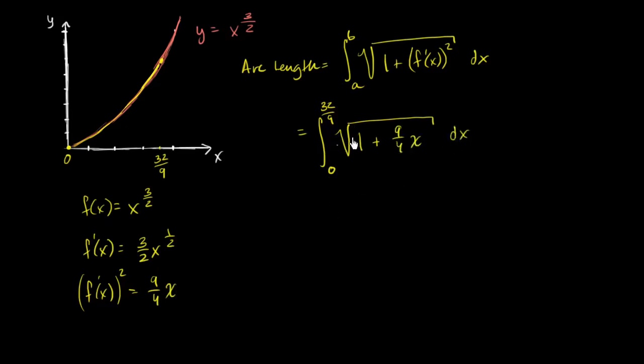And so now we just have a definite integral that we know how to solve this type of thing. And you might be able to even do this in your head, essentially do the u substitution. Say, okay, I have one plus nine fourths x. Its derivative is nine fourths. I can kind of engineer that if I want, but instead I'm just going to do straight up u substitution.